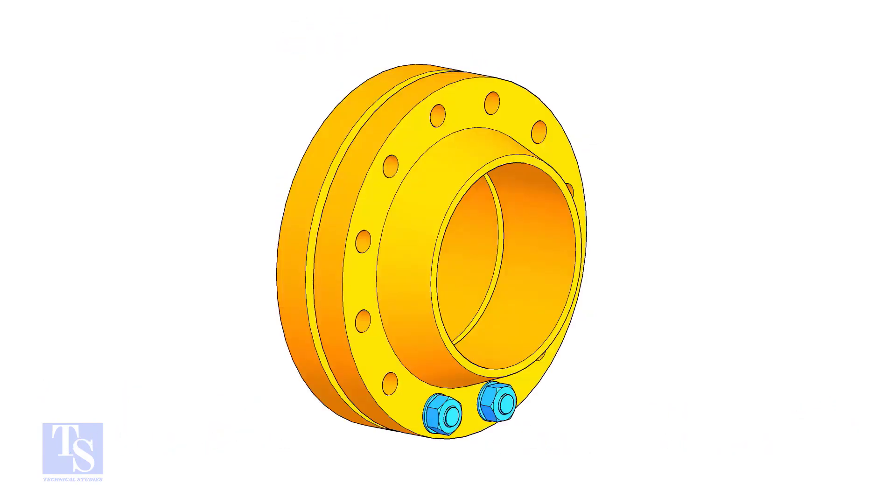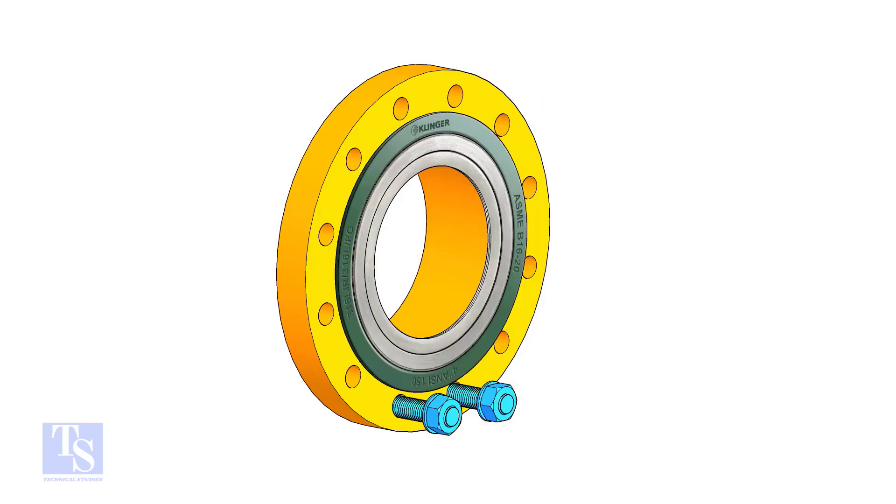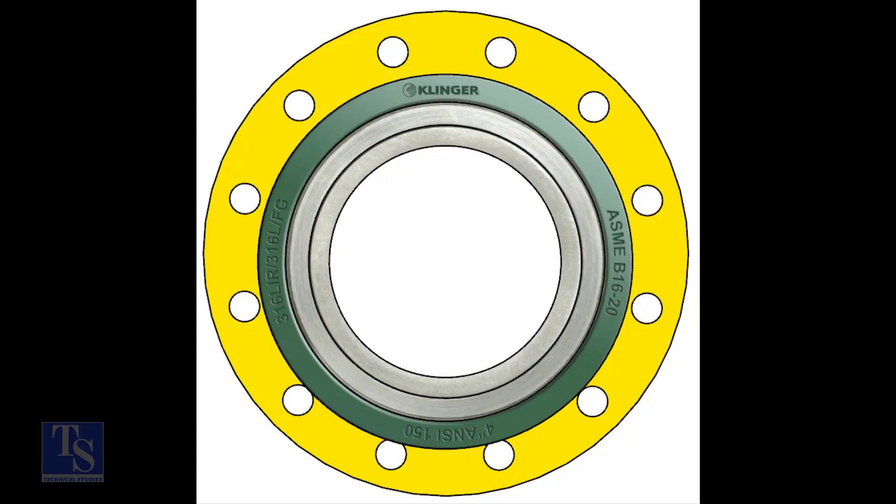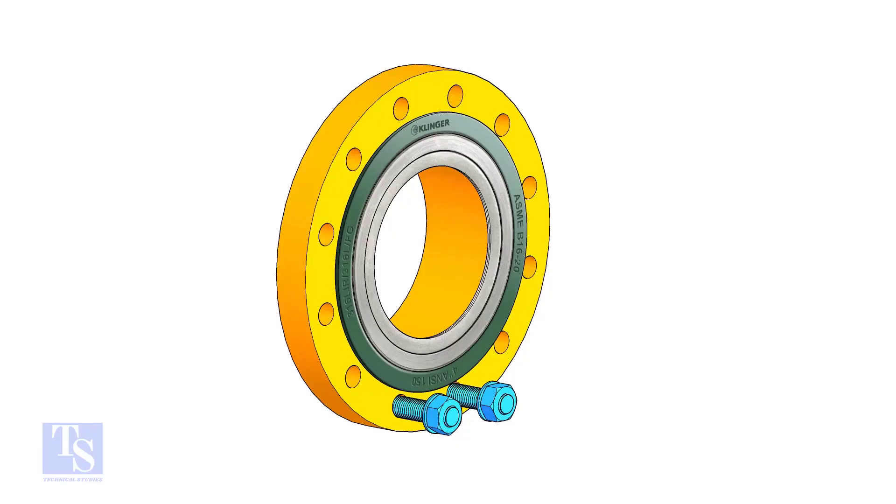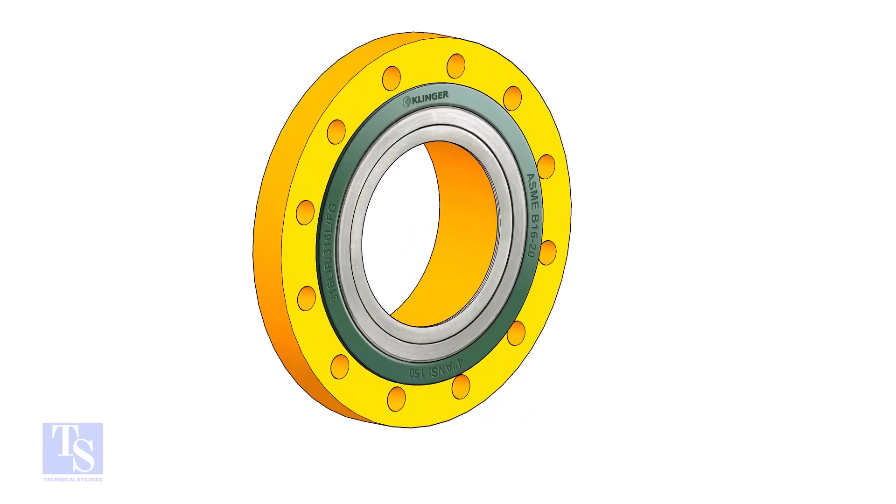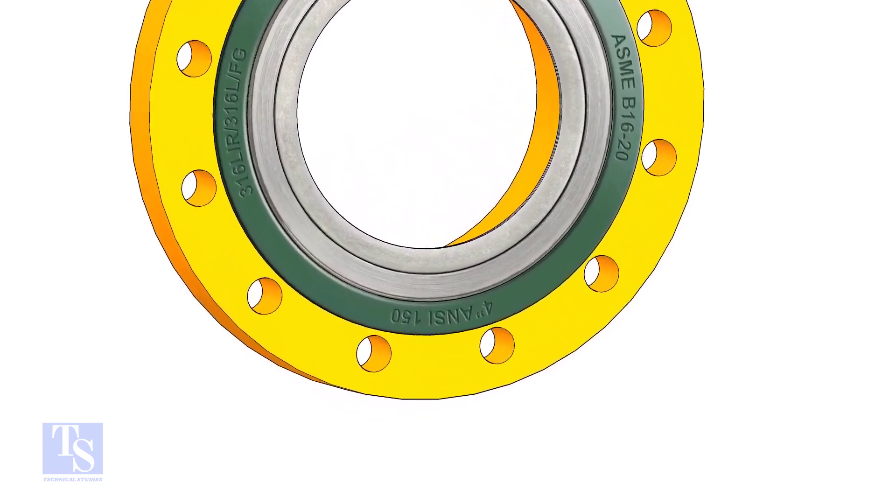Put two bolts in the adjacent bottom side holes. Put the gasket between the flanges. Now, the gasket sits eccentrically between the flanges. We need the gasket to sit exactly in the center of the flanges.